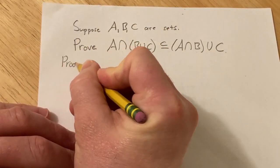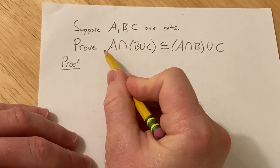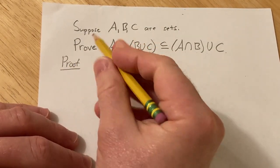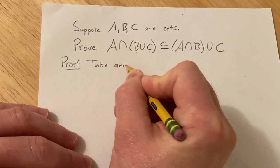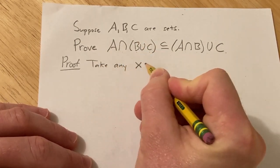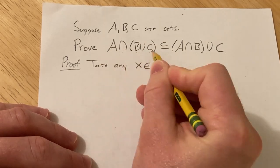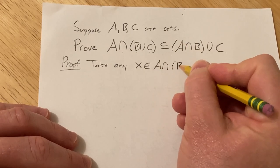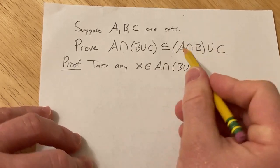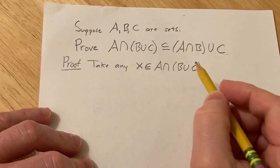So proof. We'll start our proof by taking an element in this set. So take any, and let's go ahead and call it x in this set here. So A intersect B union C. And the goal is to show that it is in this set.